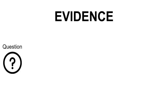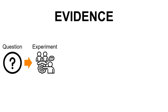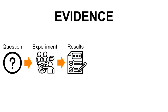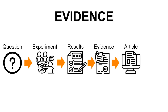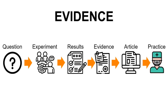Evidence starts with a question, like a researcher's question. For example: does hand washing help stop the spread of germs? Those researchers would do an experiment to test whether hand washing helps prevent the spread of germs. They get results from their experiment and that's evidence. They'd write those results up in an article, publish it, and that would be put into practice. So when we say we're looking for articles, we are looking for evidence to base our practice on.